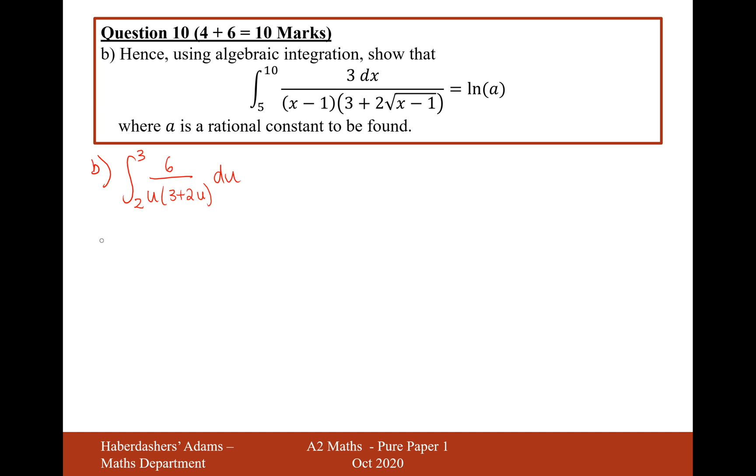I think what we're going to have to do here is we're going to have to do partial fractions. So it's going to be 6 over u(3 plus 2u) equals A over u plus B over (3 plus 2u). Let's now times by the denominator here. So it's going to be 6 equals A times the other fraction here, (3 plus 2u), plus Bu.